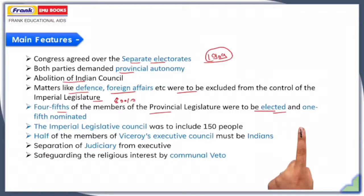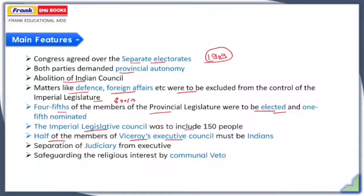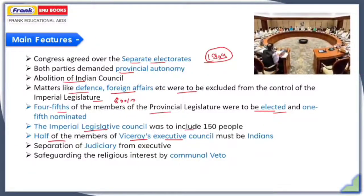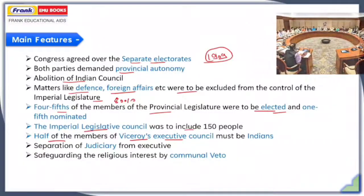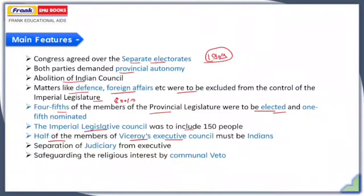They also demanded that the imperial legislative council include 150 members, and that half of the members of the Viceroy's executive council — which can be compared to the modern-day Prime Minister's cabinet — must be Indians, in order to represent the interests of Indians.